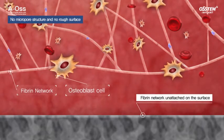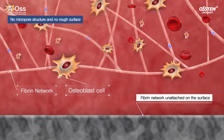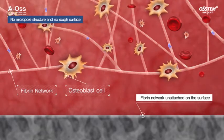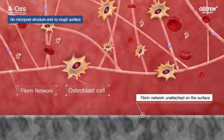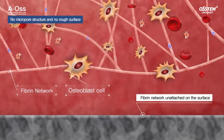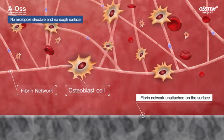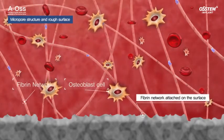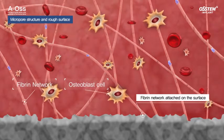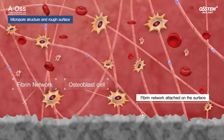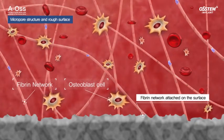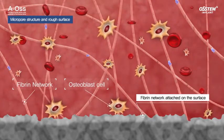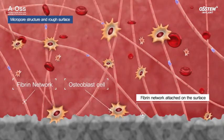On the surface without a microporous structure, the fiber network is not attached to the surface, which is a difficult environment for osteoblast cells to proliferate. On a surface with a microporous structure, the fiber network is attached to the surface, making it possible for the osteoblast cells to proliferate.